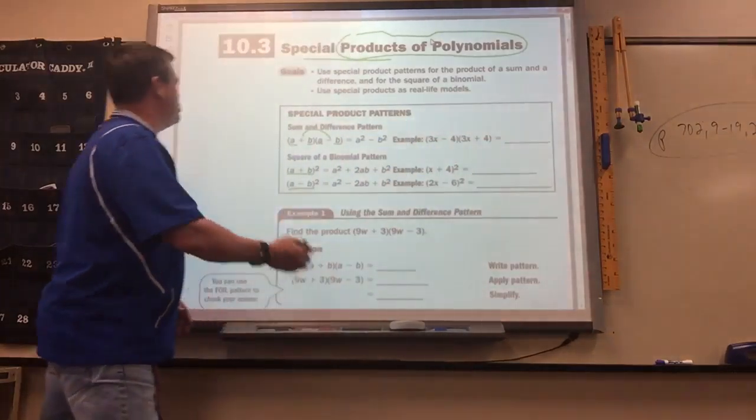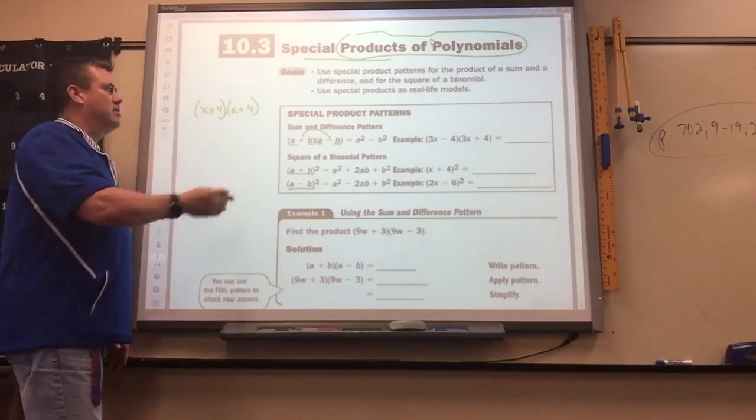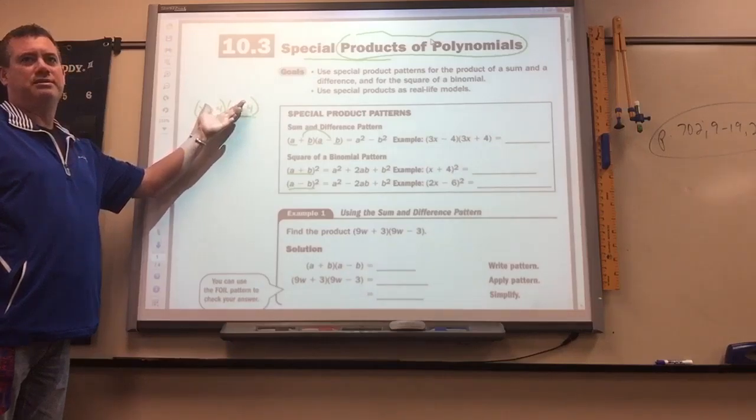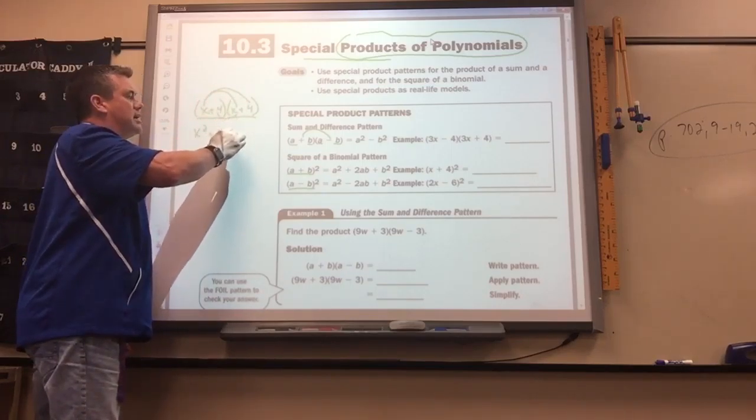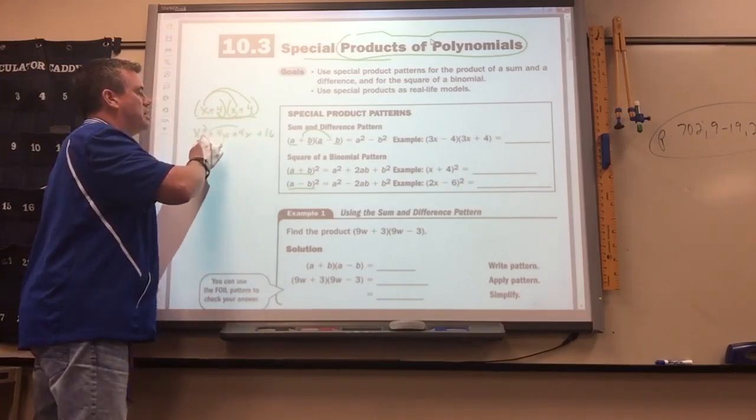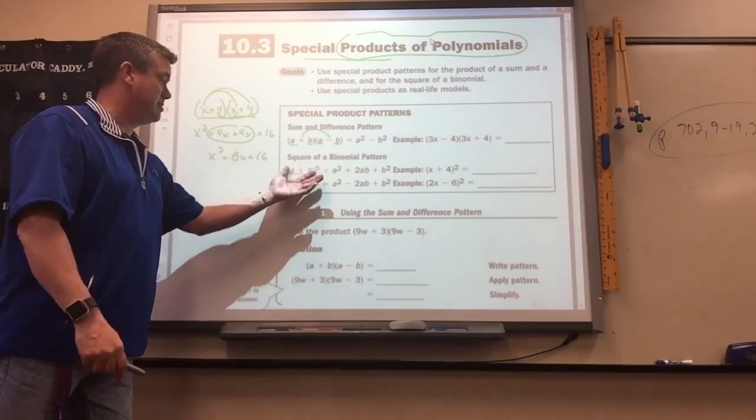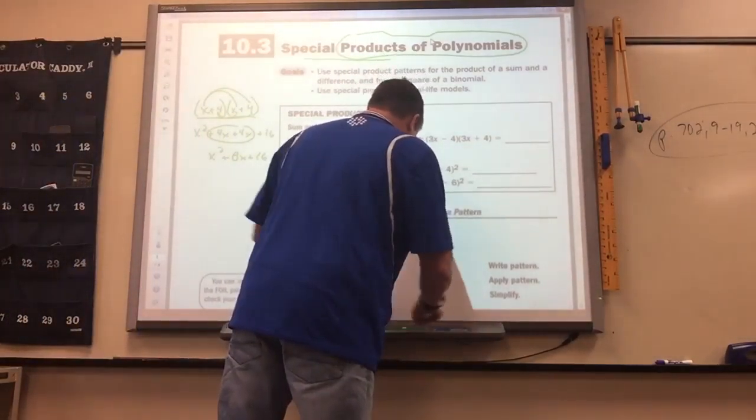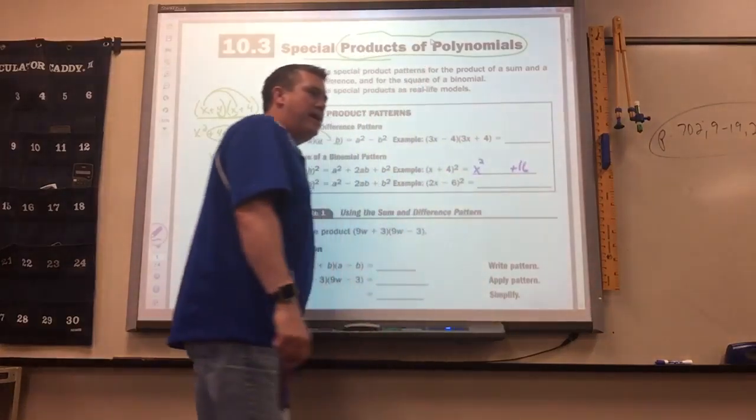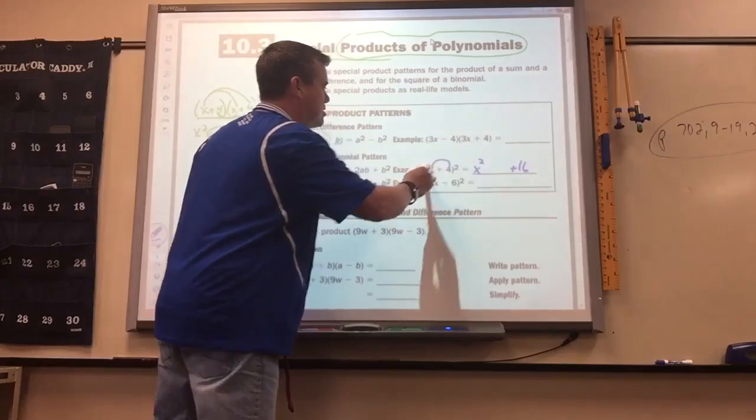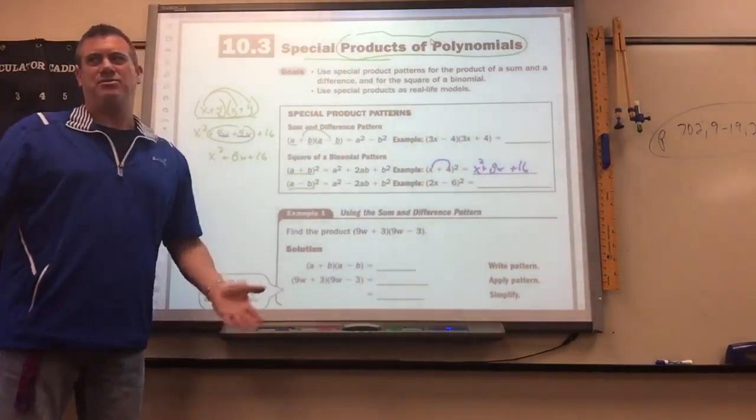Remember, x plus 4 squared means you've got to take x plus 4 times itself twice, right? This times that. So it turns into a problem just like we just did. So when you multiply it, take the x times the x, x times the 4, the 4 times the x, the 4 times the 4. So when you combine it, you get x squared plus 8x plus 16. So the shortcut is this: you can square the x, you can square the last thing, and then what's going to always happen is you multiply these two together and then double it.